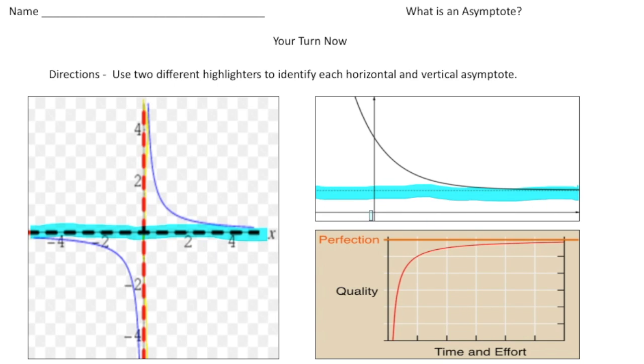But in this case there isn't a vertical asymptote because this line actually touches the axis right there. So this one does not have a vertical asymptote.